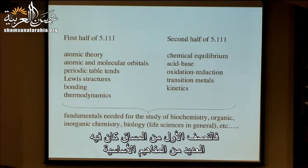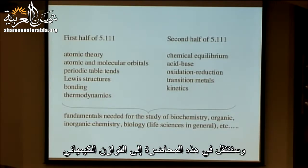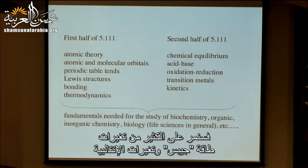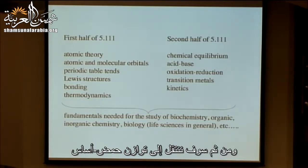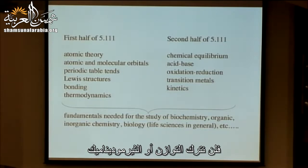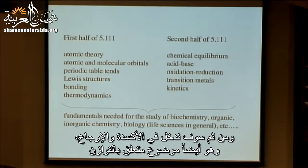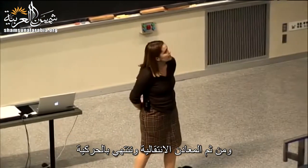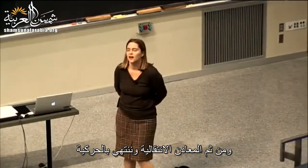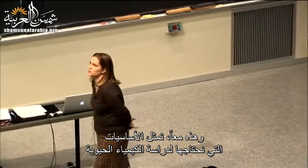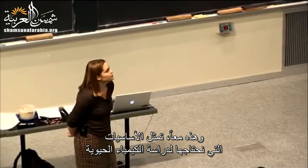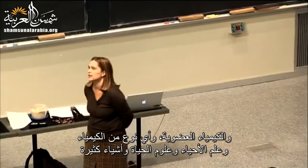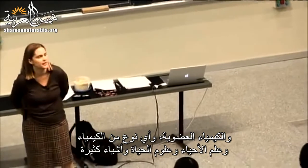The first half of the course covered a lot of basic principles. Moving today into chemical equilibrium — lots more delta G's and delta H's coming. Then we'll go into acid-base equilibrium, oxidation-reduction (also about equilibrium), then transition metals, and end with kinetics. These all together represent the fundamentals needed for the study of biochemistry, organic chemistry, biology, the life sciences, and many things.